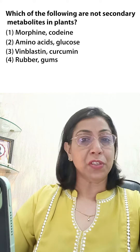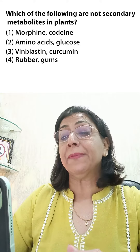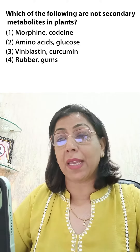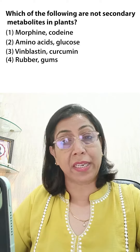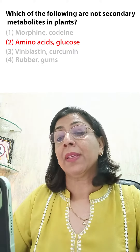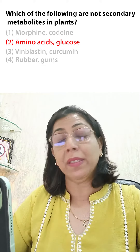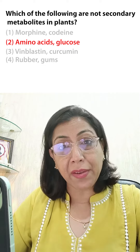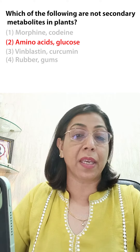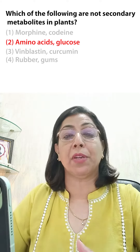The first choice is morphine and codeine — that is a secondary metabolite. The second is amino acids and glucose — that is a primary metabolite, and the answer is the second. The third is vinblastin and curcumin, which are again secondary metabolites, and the fourth is rubber and gums, which are also secondary metabolites.